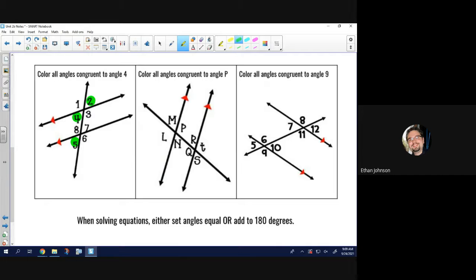Another one that would be congruent would be angle 7. Angle 4 and angle 7 are alternate interior angles. They're both inside of the parallel lines, but on opposite sides of that transversal.